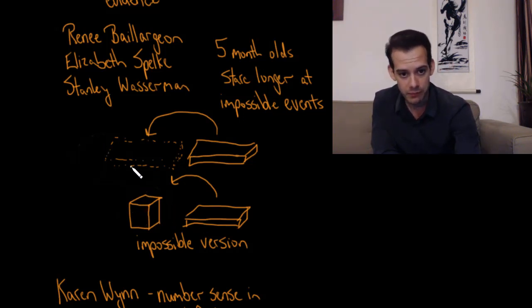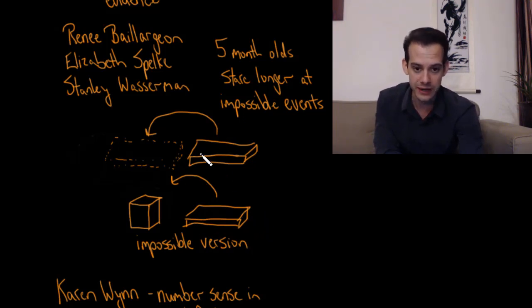But what Baillargeon, Spelke, and Wasserman found is that the infants will scrutinize this event. They'll stare at this longer. They see this where the plank rotates all the way through and this object disappears, and the five-month-old infants stare at this. They seem surprised, and this suggests that they actually understand more about how the physical world operates than Piaget initially proposed.